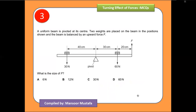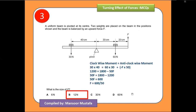The next question is again the same type. The direction of force f is already given as upward. On the left-hand side there is one force — 30 newtons with a distance of 40 centimeters from the pivot. On the right-hand side there are two forces: 60 newtons acting downward and f acting upward. Solving for f gives an answer of 12 newtons.